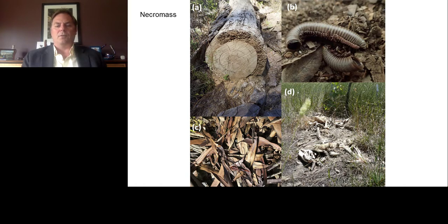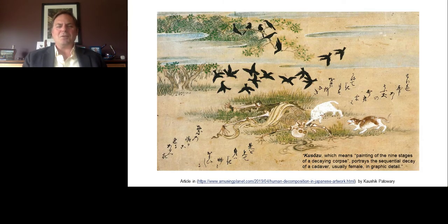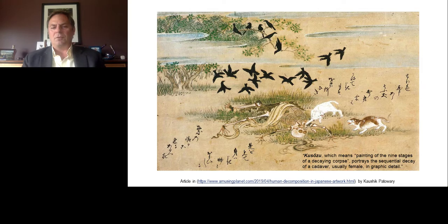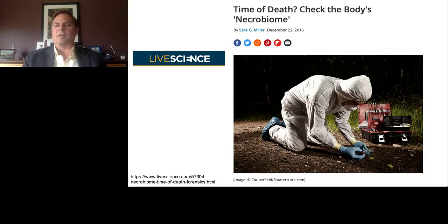We focus on vertebrate carcasses because they act as surrogates for understanding human decomposition and the biological interactions that occur. You can also see this in art — in 13th-century Japanese art depicting sequential decay of a cadaver in quite interesting detail. This is the necrobiome: the community of organisms that have evolved to consume and ultimately recycle a human body. It's here where we want to understand the basic biological and ecological mechanisms of the necrobiome to determine the postmortem interval.